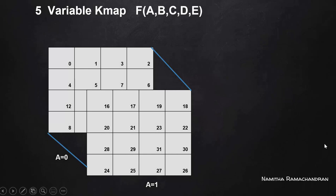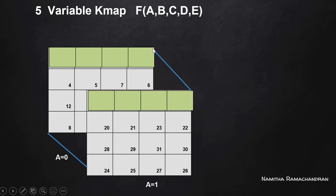For simplification, we imagine one 4-variable KMAP placed over the other — that is, the KMAP with a equal to 1 placed over the KMAP with a equal to 0. Then we try to find the maximum possible matching cells in order to generate the minimal SOP or minimal POS form. For example, if both KMAPs are full of 1s, we can consider a match between those cells.